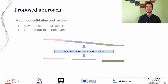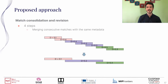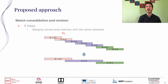After we identify the content in each window, we perform a match consolidation and revision step to filter out redundant and false positive matches. This process contains four steps. The first step is to merge consecutive matches identified as the same track, where the distance of the merged match is taken as the lowest distance among the merged matches. For example, the first two tracks identified as the same track with distances 0.1 and 0.4 are merged, taking distance 0.1.